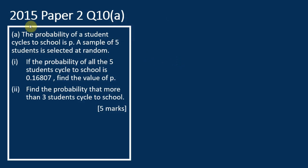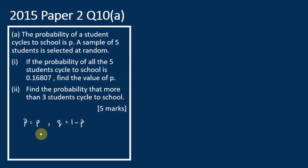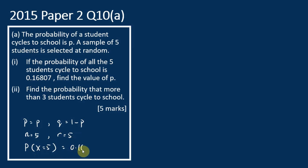Now let's look at this example — a past exam question from 2015, Paper 2, Question 10A. The probability of a student cycling to school is P, and a sample of 5 students is selected at random. So the probability of success equals P, the probability of failure Q equals 1 minus P, and N equals 5. If the probability of all 5 students cycling to school is 0.16807, then R is also equal to 5, meaning P(X = 5) = 0.16807.